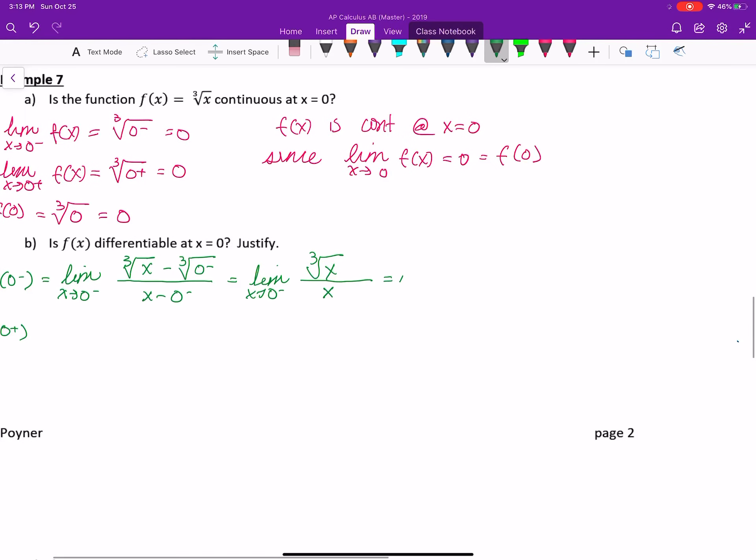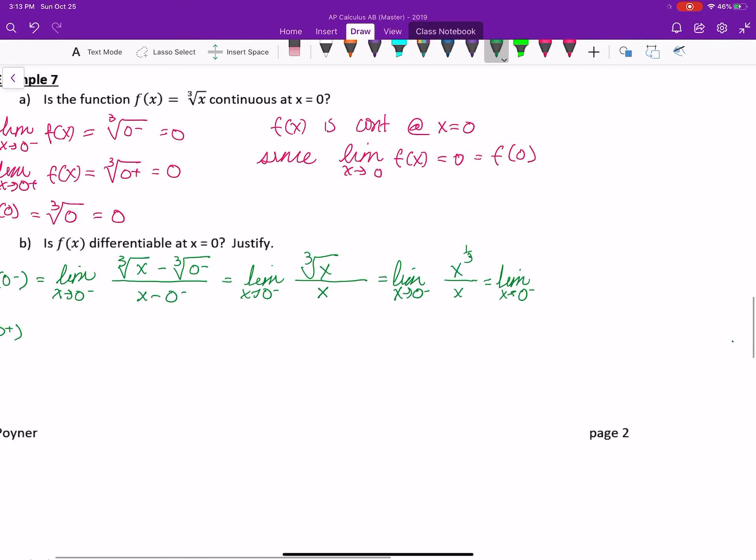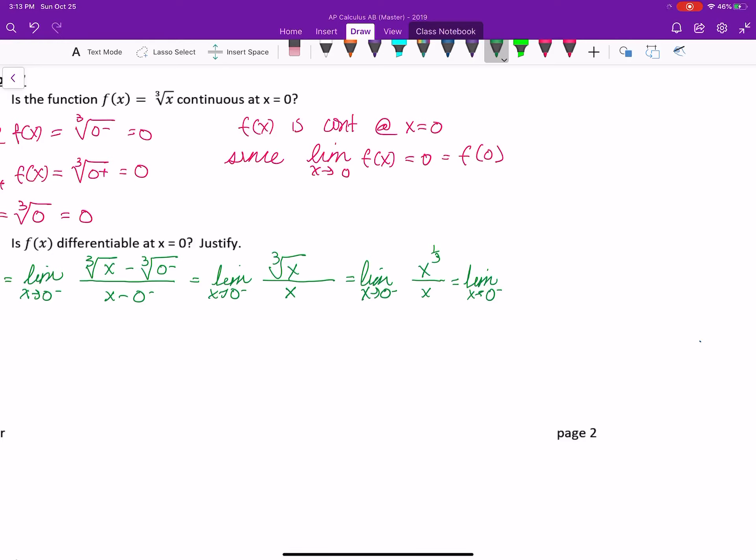All right. I'm going to simplify a little bit. So the limit as x approaches 0 from the right is going to be equal to, look, it's x to the 1/3, and this is just x, which is then going to give me the limit as x approaches 0 from the left, of 1 over x to the 2/3.